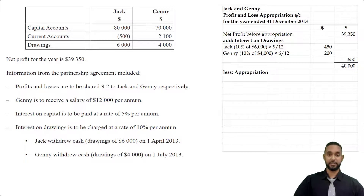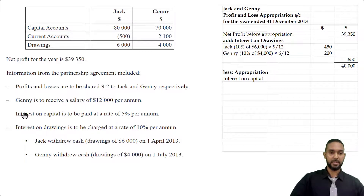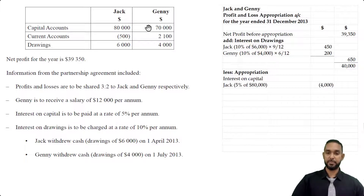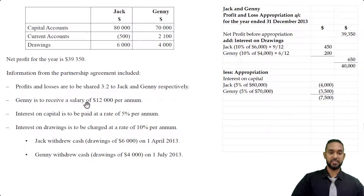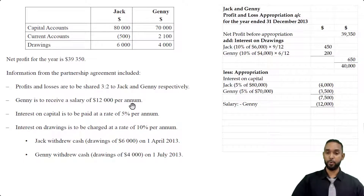Now we have the appropriation section. We're going to start with interest on capital. Interest on capital is to be paid at 5% per annum. The capital balances for Jack and Jenny are $80,000 and $70,000 respectively. So we find 5% of $80,000 for Jack and 5% of $70,000 for Jenny, giving us $4,000 and $3,500 respectively, totaling $7,500. Don't forget Jenny is to receive a salary of $12,000 per annum, giving us a subtotal of $19,500, which when subtracted from $40,000 gives us $20,500.